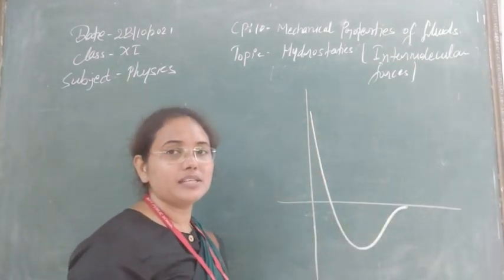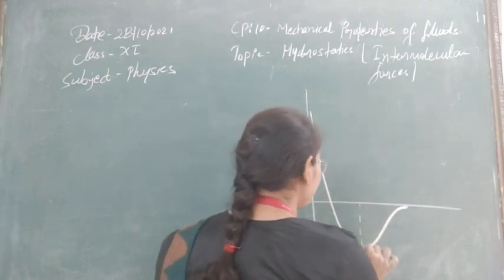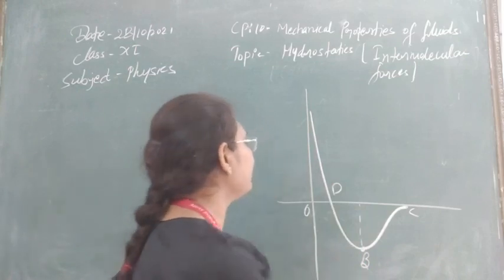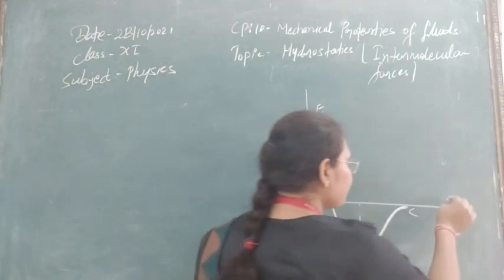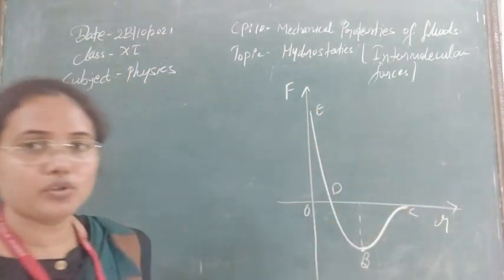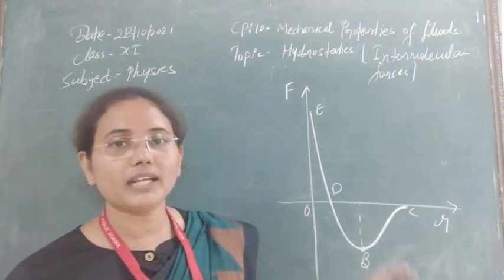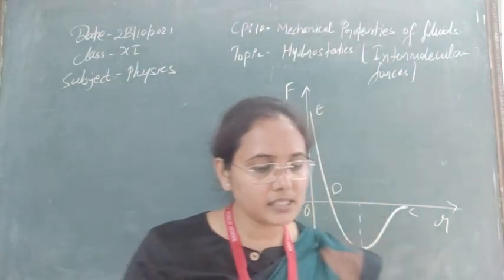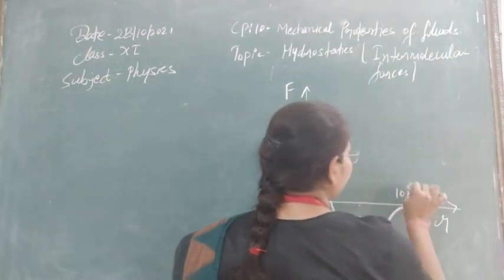In this graph, the x-axis represents intermolecular separation and the y-axis represents intermolecular force, with key points labeled B, C, D, and E on the curve. The graph shows how the force varies as the distance between atoms changes.